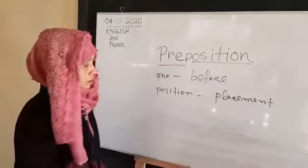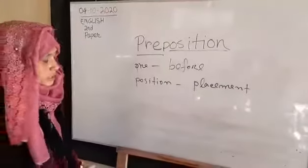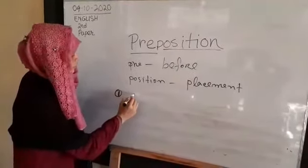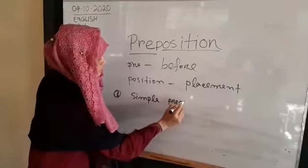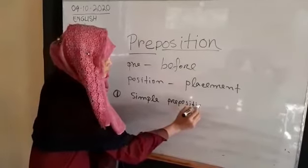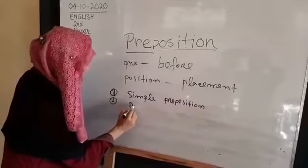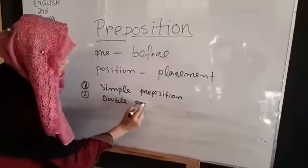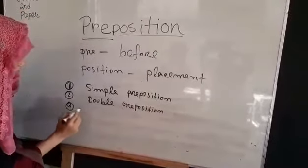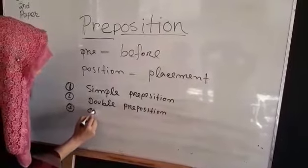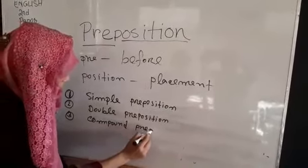Now we learn what is classification of prepositions. There are six types of prepositions. Number one: simple prepositions. Number two: double prepositions. Number three: compound prepositions.